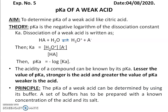Coming to the principle part: the pKa of a weak acid can be determined by using its buffers. Here we are using citric acid and sodium citrate. For that, we have to prepare a set of buffers and measure the pH of each buffer.